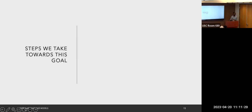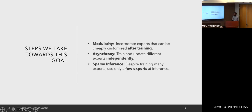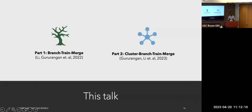Looking forward, modular language models may lead to a future where instead of merely being consumers of large dense models trained by corporations, institutions or users could own the development and maintenance of experts. The modularity should enable experts to be trained and contributed to asynchronously. In this talk, I'll describe our steps towards building modular language models — introducing modularity, asynchronous training, and sparse inference — covering two main methods: Branch-Train-Merge and Cluster Branch-Train-Merge.